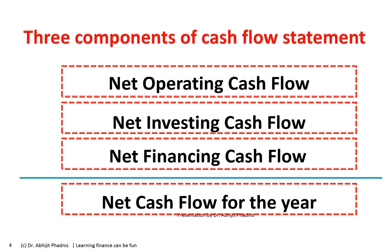Each net cash flow can carry a plus or minus sign. Net operating cash flow being positive means inflows exceed outflows. Net investing cash flow being positive means inflow from sale of assets exceeds outflow for acquiring new assets. Net financing cash flow being positive means we have taken more money from others than we have returned. If negative, we have returned more than we have freshly taken.